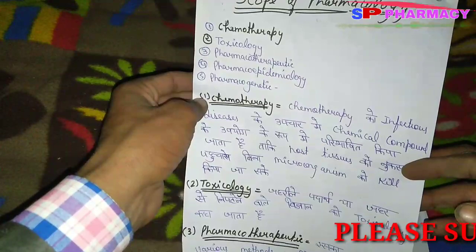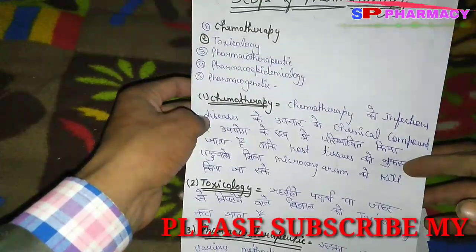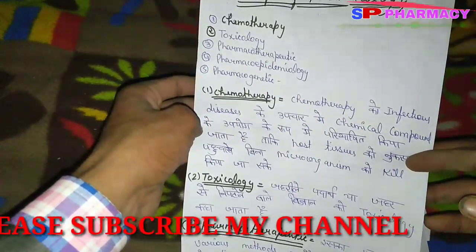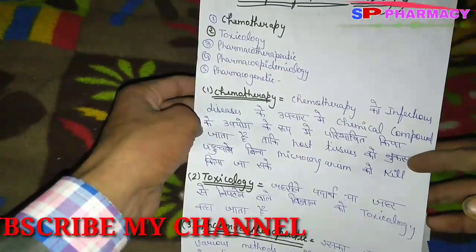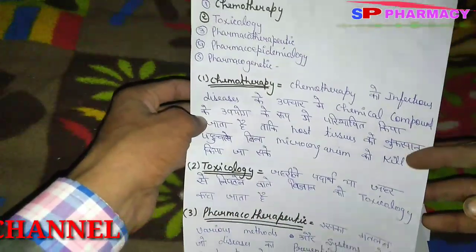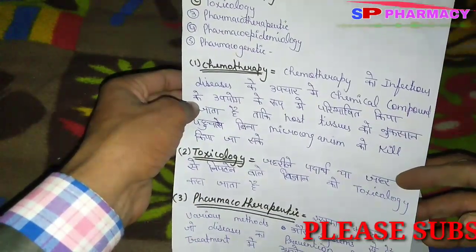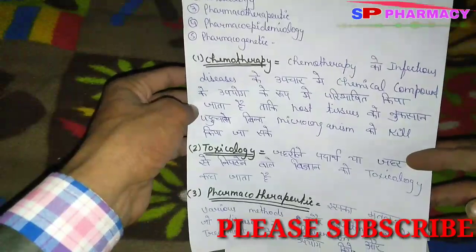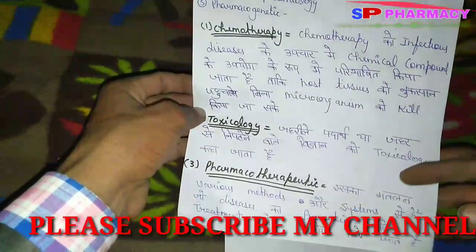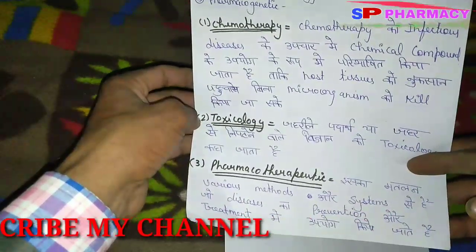पहला है कीमोथेरेपी। कीमोथेरेपी को infectious disease के उपचार में chemical compound के उपयोग के रूप में परिभाषित किया जाता है, ताकि host cell को नुकसान पहुंचाए बिना micro organism को kill किया जा सके।